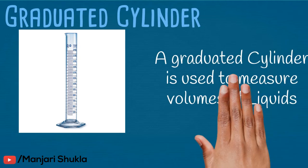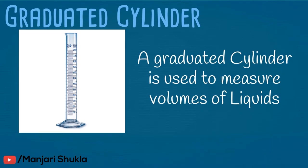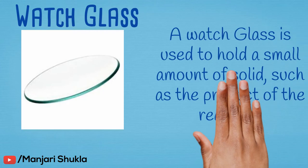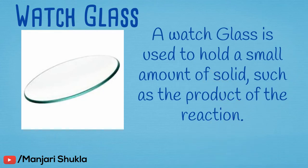A graduated cylinder is used to measure volumes of liquids. A watch glass is used to hold a small amount of solid, such as the product of a reaction.